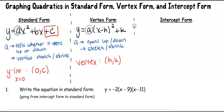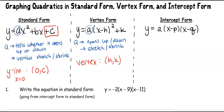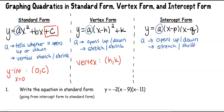Our last form is intercept form. The general form is y equals a times (x minus p) times (x minus q). The 'a' value works exactly the same — it shows us whether it opens up or down and whether there's a stretch or a shrink.